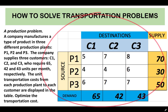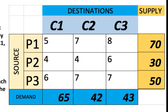Here is our problem for today. A company manufactures a product in three different production plants: P1, P2, and P3. The company supplies three customers — C1, C2, and C3 — who require 65, 42, and 43 units per month, respectively. The unit transportation costs from each production plant to each customer are displayed in the table. For example, the transportation cost from plant P1 to customer C1 is $5, and from plant P2 to customer C1 is $4, and so on.